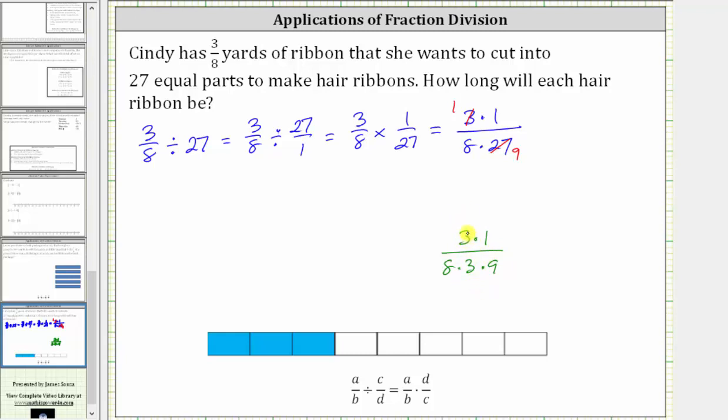3 divided by 3 simplifies to 1. Either way, when we multiply now, the fraction will be in simplified form. In the numerator, we have 1 times 1, which is 1. In the denominator, we have 8 times 9, which is 72.